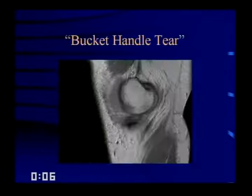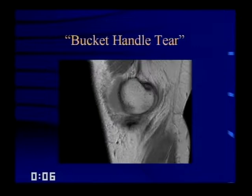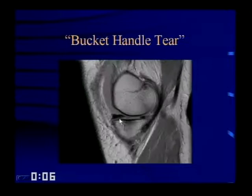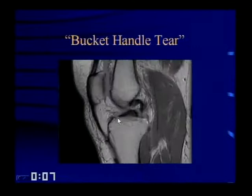Here's an example of a bucket handle tear. Starting from the outer sagittal slice and working toward the intercondylar notch, there's not much of a body. On the next slice, the anterior horn is much bigger than the posterior horn — recall the posterior horn should be larger. On subsequent slices, you start to see two little anterior horns, which of course there shouldn't be. Then you see the classic double PCL sign: the normal PCL here, and the flipped fragment in the intercondylar notch making a second PCL.